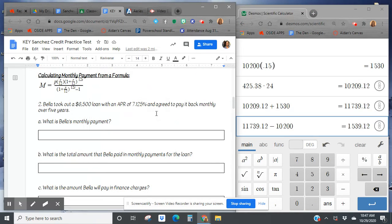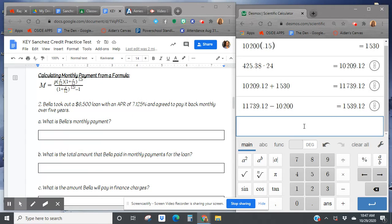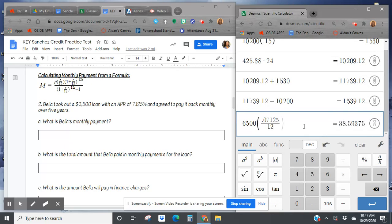So we're going to go into Desmos and we're just typing straight into that formula. So our principal is $6,500 times the rate, 0.07125, divided by 12, and that's because it's monthly. One plus the rate, divided by 12. And then this goes to the power of 12t, our time is five years, so 12 times 5.